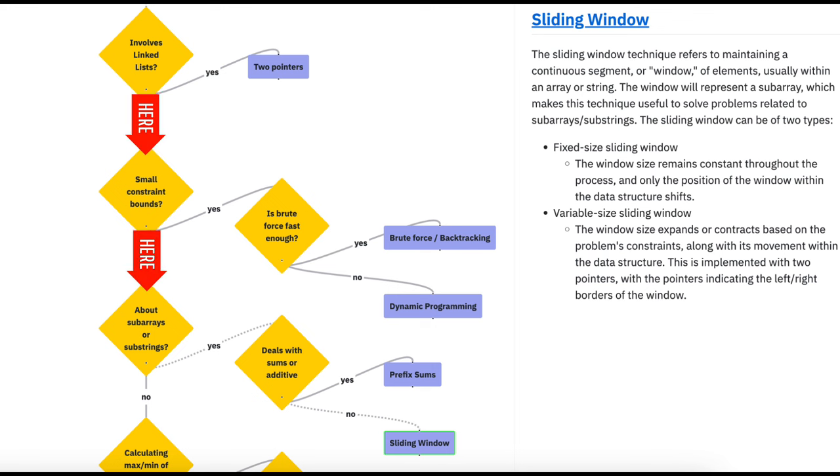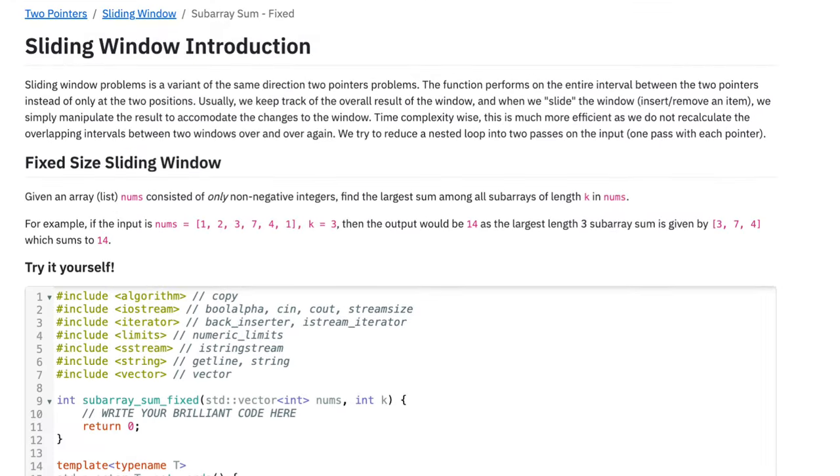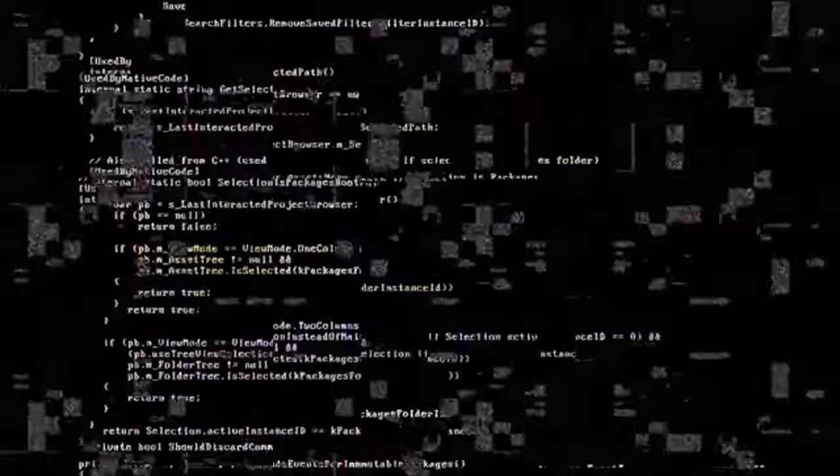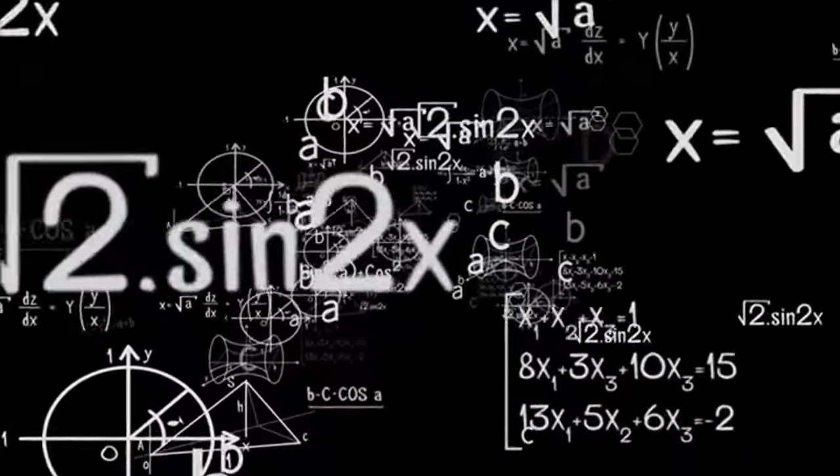Progress through the flowchart by answering questions and following the branches until you reach a leaf node, at which point you'll discover the perfect algorithm suited for your problem. With this helpful flowchart at your fingertips, the process of algorithm selection has become much more approachable.